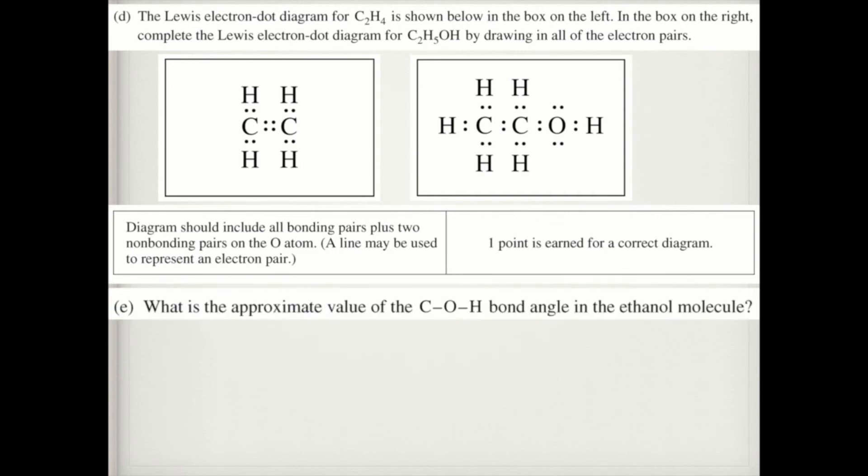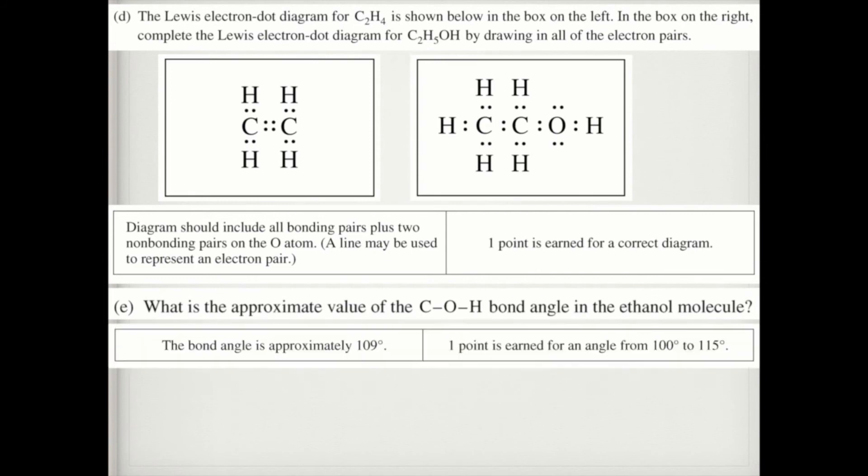Part e: What is the approximate value of the COH bond angle? You have four electron domains there, so even though the actual shape is tetrahedral, the bond angle is going to be a little bit less than 109.5 degrees. So the bond angle is approximately 109 degrees.